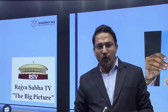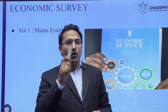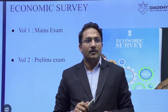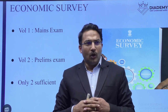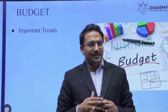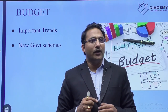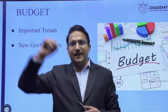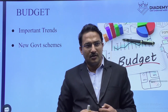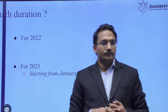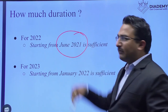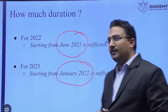Big Picture — just for identification of mains topics. AIR News: if you have more time available, it is good, but if you don't follow it, don't be guilty about it. Economic Survey: Volume 1 is important for mains — they give recommendations. Volume 2 is important for the prelims examination. Only the last two economic surveys are more than sufficient. For Budget: what is important is trends like whether healthcare and education expenditure is increasing or decreasing, fiscal deficit trend over the last ten years, and new government schemes introduced by the government. For 2022 preparation, you can start from June 2021 current affairs — this is more than sufficient. For 2023, start from January 2022.